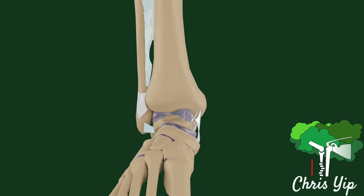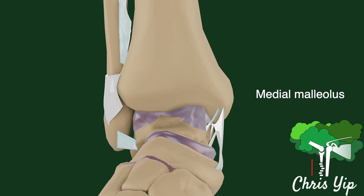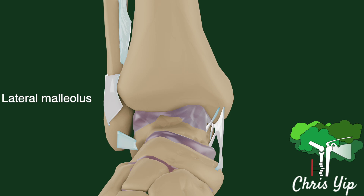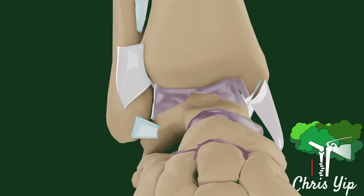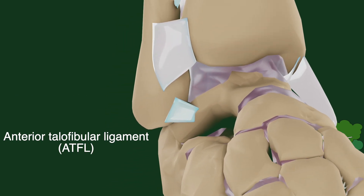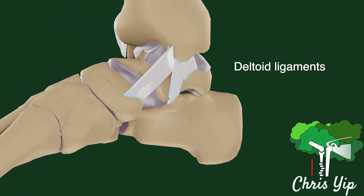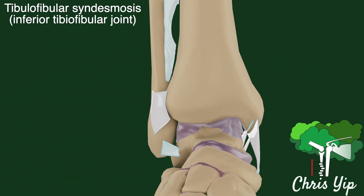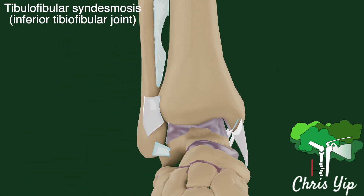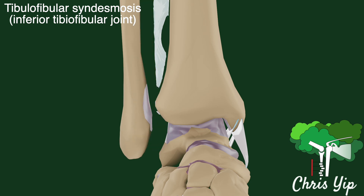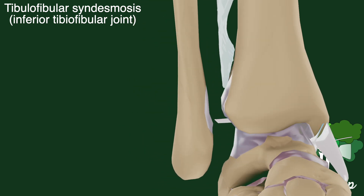Structures involved in ankle fractures include the medial malleolus, the tibial plafond, the lateral malleolus, and ligamentous structures such as the talofibular ligaments and the deltoid ligaments. There is also the tibial fibular syndesmosis, sometimes referred to as the inferior tibial fibular joint, which is a fibrous joint formed by the distal tibia and fibula. The distal parts of it may be covered by articular cartilage.